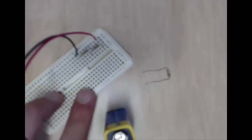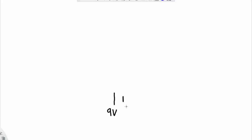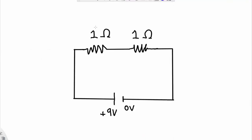So if I wanted to draw a circuit diagram of this circuit, it would look like this. So here we go, we have two 1 ohm resistors. Current would flow from the positive terminal straight to the first resistor, then through the second resistor, and finally come round to the negative terminal.